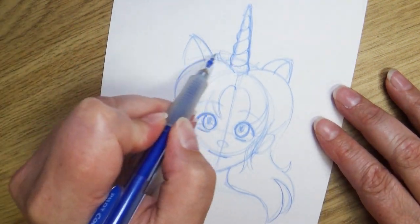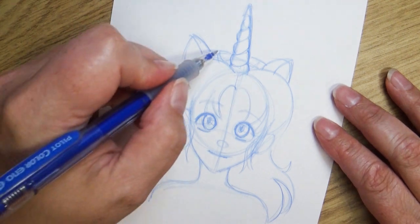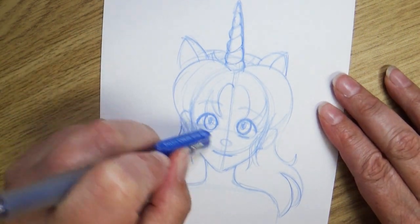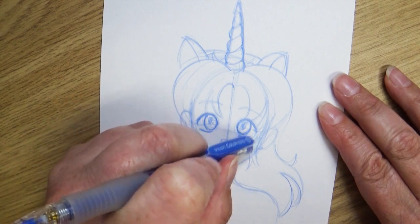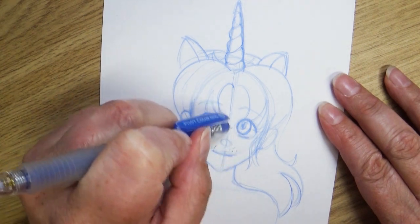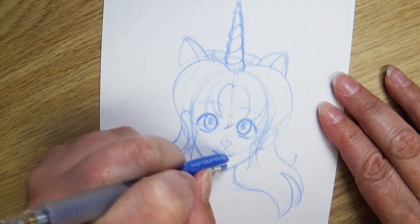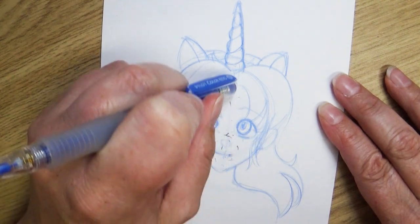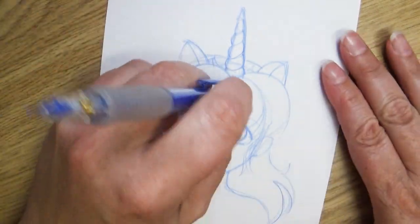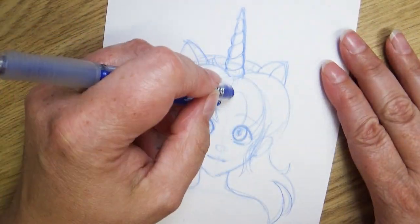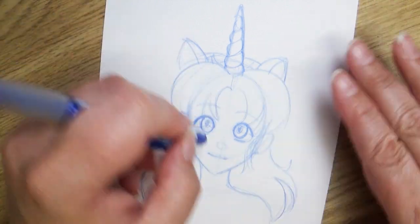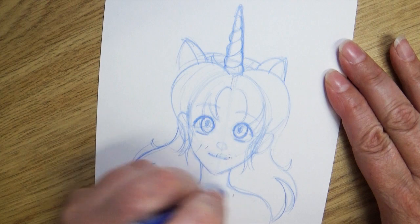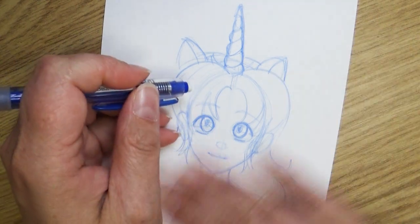So this is the last part of our sketch where we kind of look and double check to make sure everything is in the place that we want it. This is a good time to go back and erase the guidelines that you don't need anymore. I probably should have said this tip before you placed in your guidelines but draw really lightly with your pencil. Using a light weight on your pencil can make it so much easier to erase. If you really are digging your pencil in there then it can be super hard to erase those guidelines.